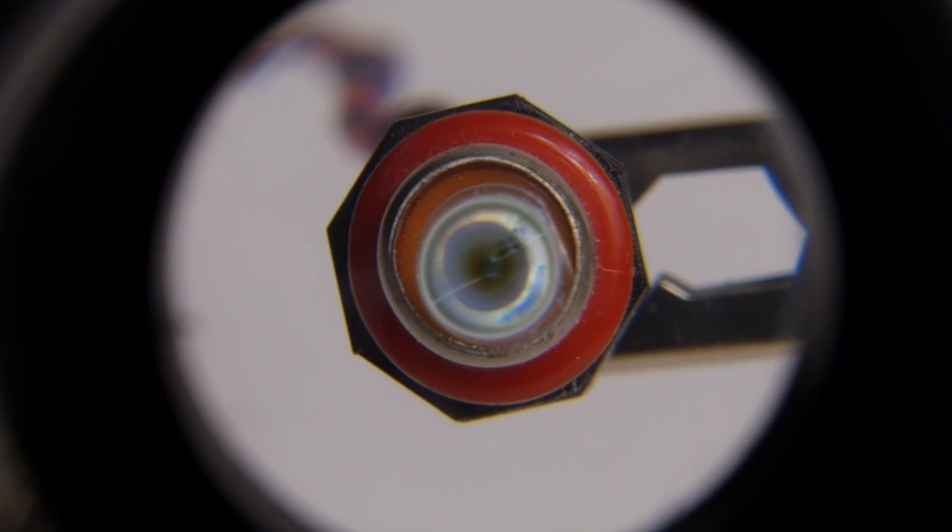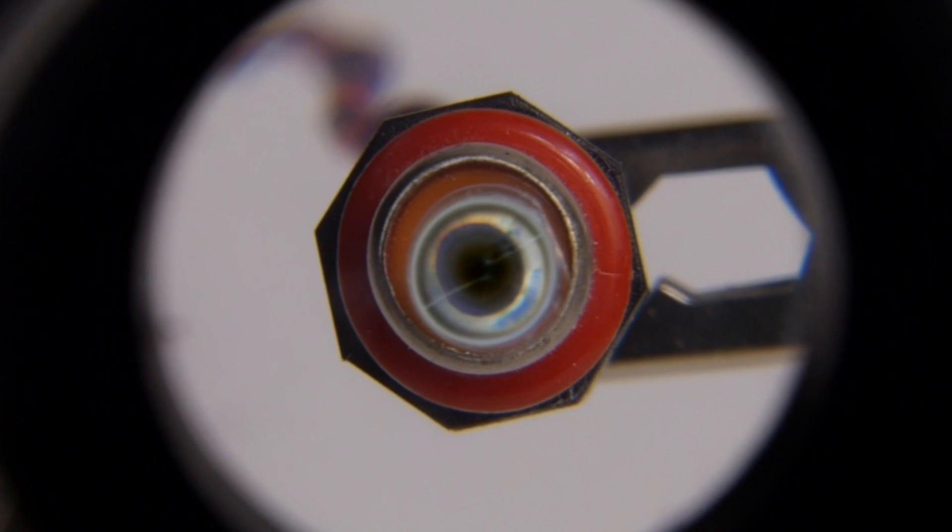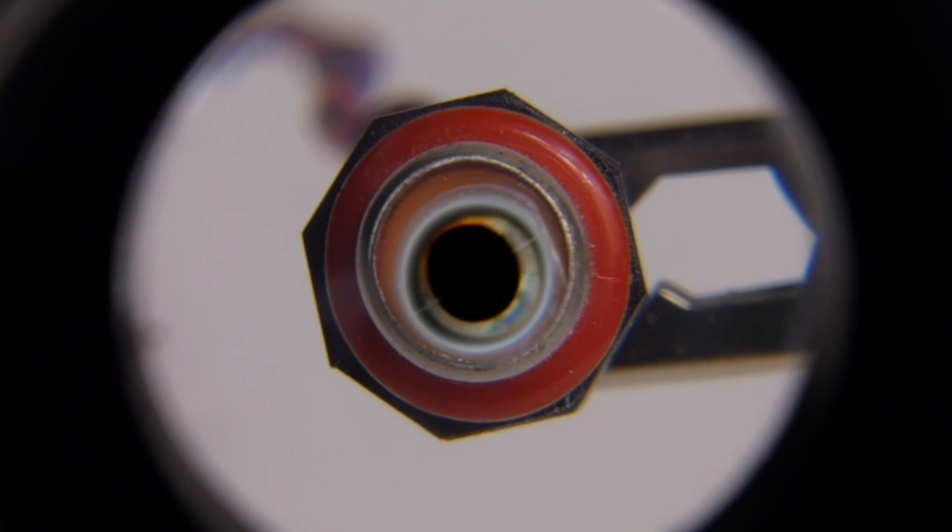The output of the dark emitting diode is clearly spherical, yet somehow focuses with a traditional lens.